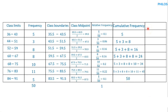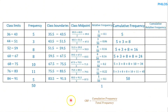Now let's find cumulative relative frequency. Let's draw a new column and name it cumulative relative frequency. There are two ways to do this. The first method: since the name contains 'relative frequency,' we use a similar approach, but this time targeting the cumulative frequency. The formula is: cumulative relative frequency equals the cumulative frequency of that class divided by the total frequency.